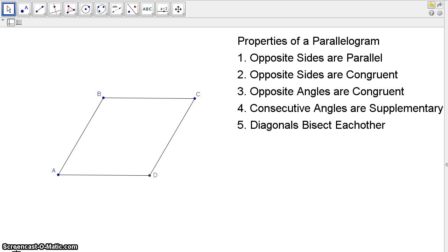When dealing with parallelograms, we have five properties that we have to work with. The first one is that opposite sides are parallel, which is really kind of the definition of it being a parallelogram.